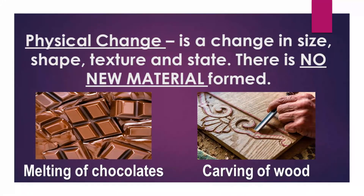Physical change is a change in size, shape, texture, and state — there is no new material formed. For example, melting of chocolates: there is a change in state from solid to liquid, but there is no new material formed — it is still chocolate. Next, carving of wood: there is a change in size, shape, and texture, but it is still wood. There is no new material formed. That is physical change.